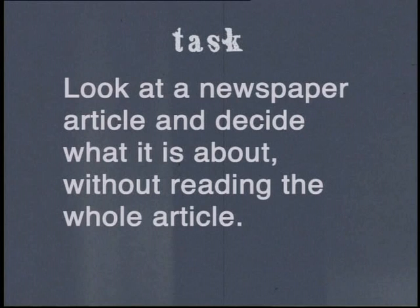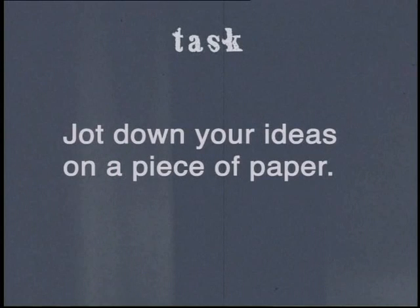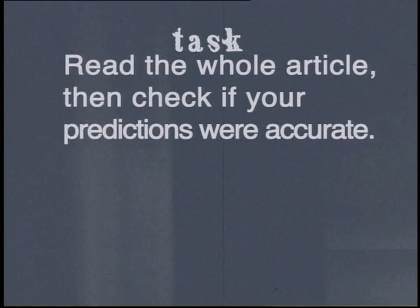For really good practice in skimming, complete this exercise. Look at a newspaper article and decide what it is about without reading the whole article. Jot down your ideas on a piece of paper. Remember that you must always express your findings in your own words so that you can check that you have understood the meaning. Once you have written down your predictions, read the whole article and check if your predictions were accurate. If you and a friend both complete this task using the same article, it would be interesting to compare whose predictions were more accurate.